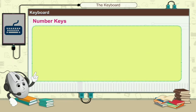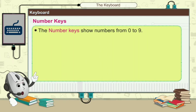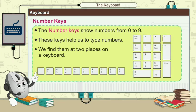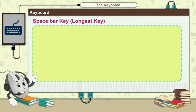Today we are going to learn about number keys. The number key shows numbers from 0 to 9. This key helps us to type numbers. We find them in two places on the keyboard. ये कीबोर्ड पे दो places पे available होती हैं.